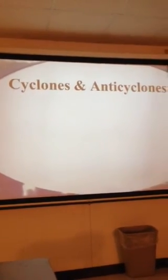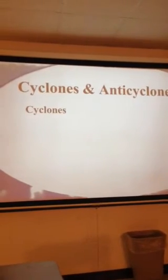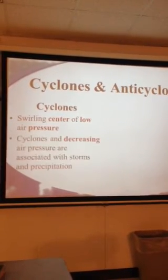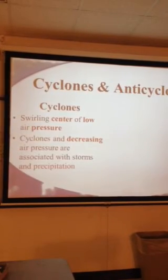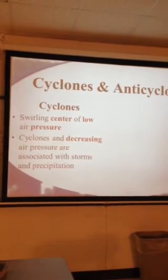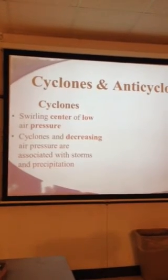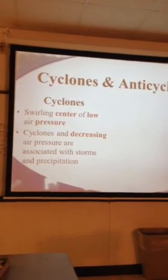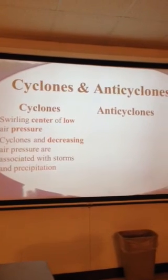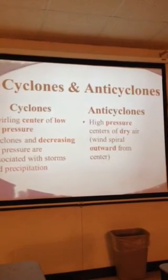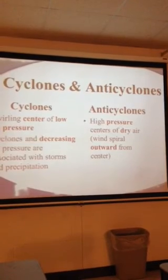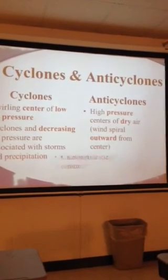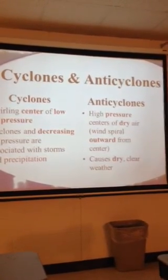A cyclone is a swirling center of low air pressure. Cyclones and decreasing air pressure are associated with storms and precipitation — the air pressure is dropping, and low air pressure goes with warm air and stormy conditions. Anti-cyclones have a high pressure center of dry air where wind spirals outward from the center, associated with colder air and causing dry, clear weather.